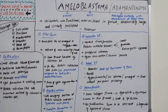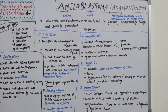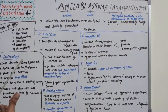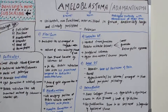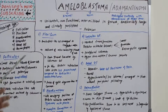Desmoplastic type: features a dense collagen stroma that is hypocellular and hyalinized, growing in thin strands and cords of epithelium. The proliferation appears compressed and fragmented by the hyalinized stroma, giving a compressed and fragmented stroma appearance.